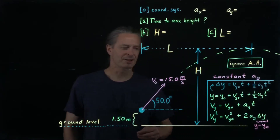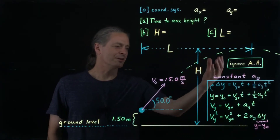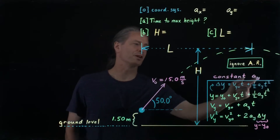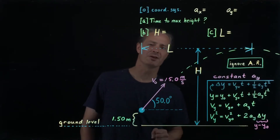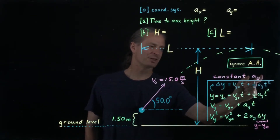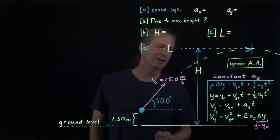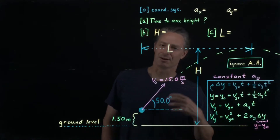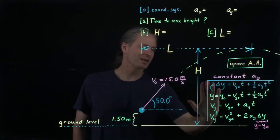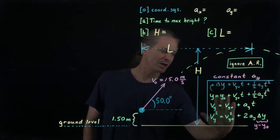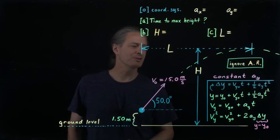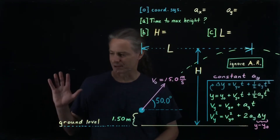Speaking of constant acceleration, I've written here the component equations of motion for the case of a constant acceleration component — in particular for a constant a sub y. I can also write them out for a constant a sub x by taking every y and changing it to an x. Let me do that and rewrite them over here.